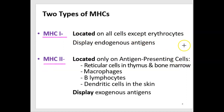MHC1 is located on every cell in your body except erythrocytes. Red blood cells don't have a nucleus, don't process antigens, and don't make proteins, so they won't make MHC. These MHC1 molecules display antigens made inside the cell — endogenous antigens. Sometimes those are just self-antigens from normal metabolism; other times they're from cells that have engulfed a particle and processed and displayed the foreign particle.